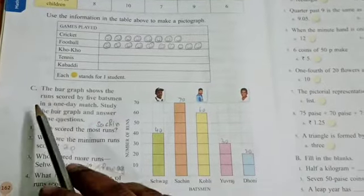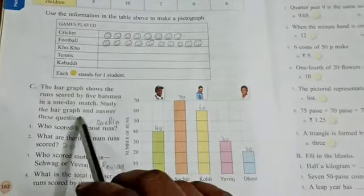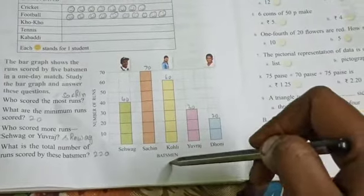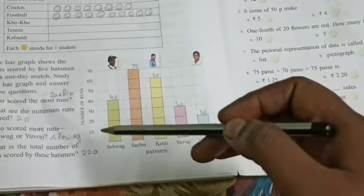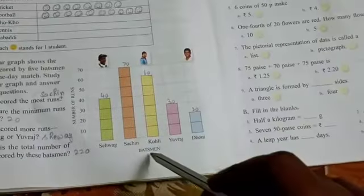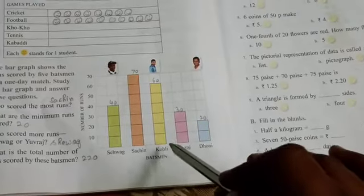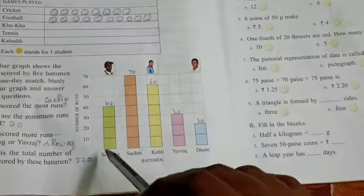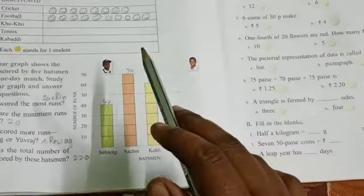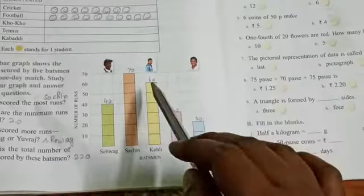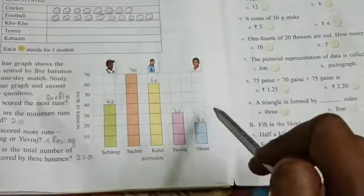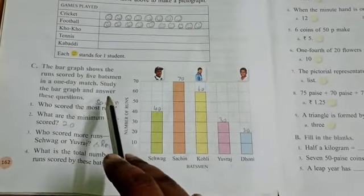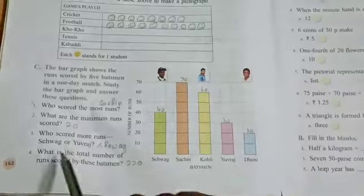Now see, the bar graph shows the runs scored by five batsmen in a one-day match. Study the bar graph and answer these questions. In this bar graph, the sleeping line is the batsman and the standing line is the number of runs. Runs will be 10 to 70. Batsmen: Sehwag, Sachin, Kohli, Yuvraj, Dhoni. Sehwag has 40 runs, Sachin 70 runs, Kohli 60 runs, Yuvraj 30 runs, Dhoni 20 runs. Use this data to find the answer. Who scored the most runs? Sachin, because Sachin has 70.